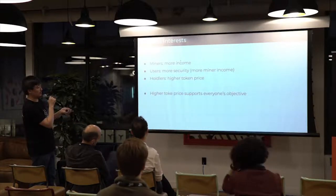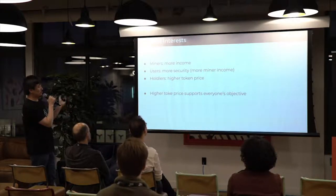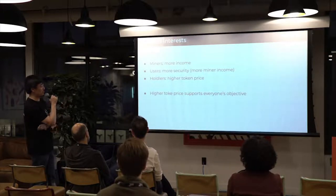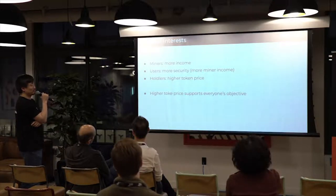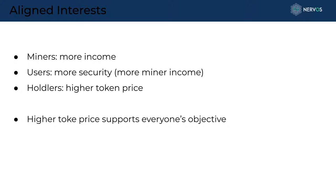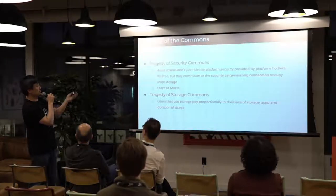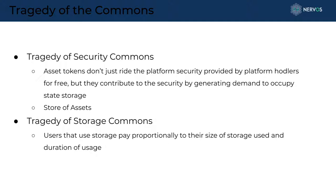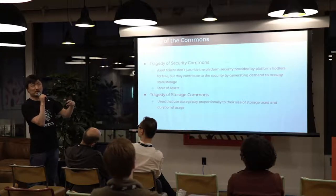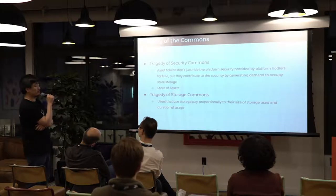Unlike other platforms that may not align their participants' interests, for us it's straightforward: miners want higher token price for more income; users want higher token price for more security; hodlers want higher token price. Everybody is looking at the same objective — higher token price. This makes it much easier to design governance mechanisms because the community is aligned. We couple the economic demand of upper-layer assets with the platform token, avoiding the situation where the platform token generates no demand.